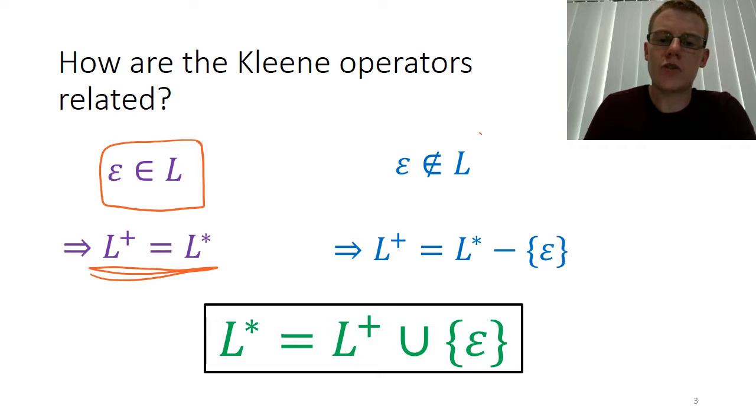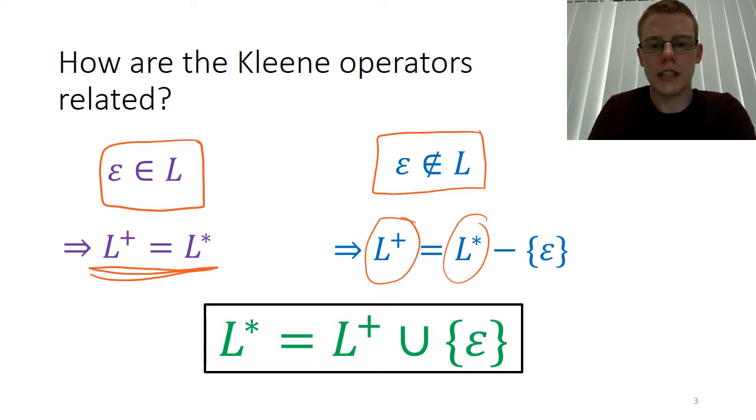If the empty string is not part of the language, then L plus is simply L Kleene minus the empty string. So it's the exact same set, except we no longer have the empty string in it. So we can see that the overall actual relationship that's always true is that L Kleene is the L plus of the language union with the set containing only the empty string.